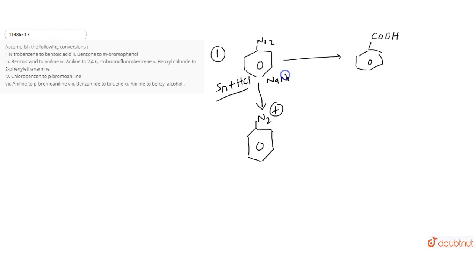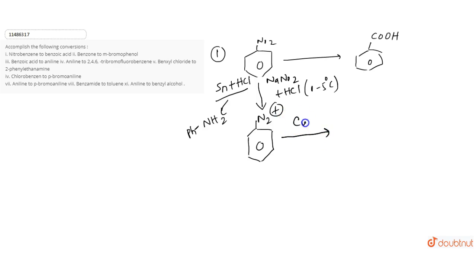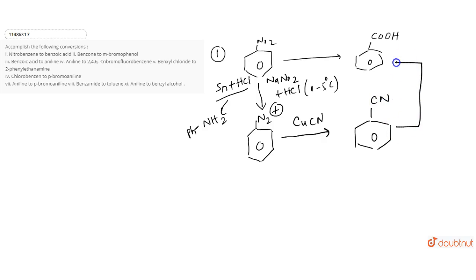Using NaN2 plus HCl at a temperature of 0 to 5 degrees centigrade, the NH2 group converts into benzene diazonium salt. Then using CuCN, the CN group is introduced into the benzene ring. On acidic hydrolysis, it will produce benzoic acid. So the first conversion is done.